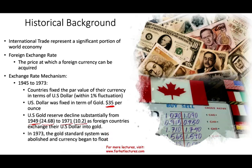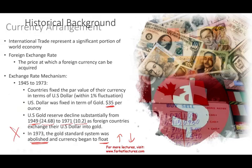In 1973, the gold standard system was abolished and currencies began to float. Float means the price of a currency can go up or down depending on interest rates, supply and demand, macroeconomic factors, and the level of inflation in a particular country. So we moved from a fixed system to a floating system.